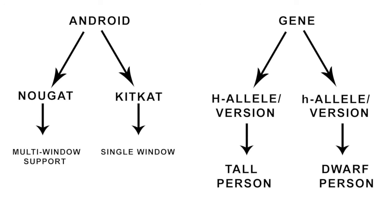On the other hand, we have this lowercase h allele. It has a phenotype of dwarf person. So the tall person is dominant over the dwarf person, so the uppercase H here is the dominant allele.